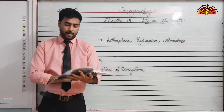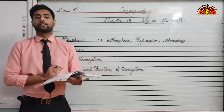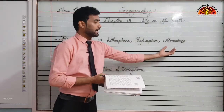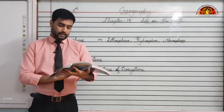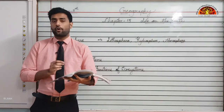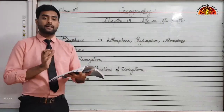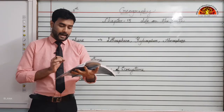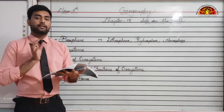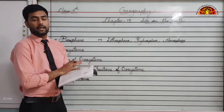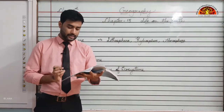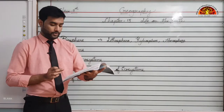The biosphere and its components are very significant elements of the environment. These elements interact with other components of the natural landscape such as land, water and soil. They are also influenced by atmospheric elements such as temperature, rainfall, moisture and sunlight.